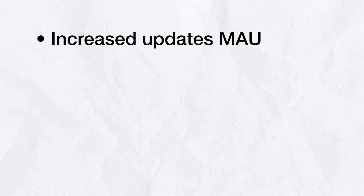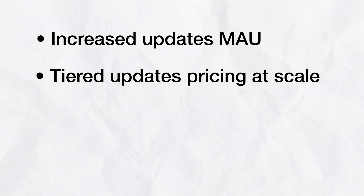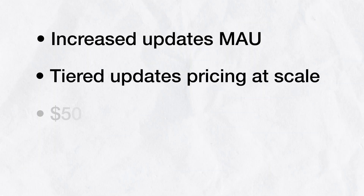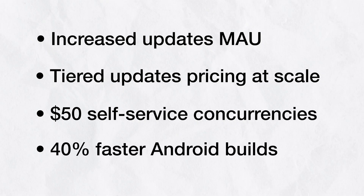To wrap up: you now get more MAU when you subscribe to a plan, we are lowering our prices on MAU at scale, concurrencies are now $50 instead of $200, and your Android builds should be much faster. That's all for today — thank you so much for watching, and I hope you have a really good day.